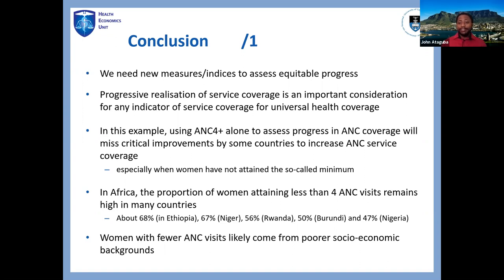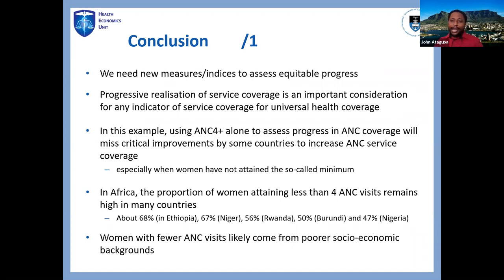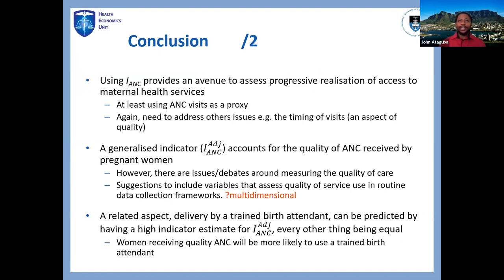In Africa, the proportion of women with less than four ANC visits remains really high. In Ethiopia, close to 70% of women have not had up to four ANC visits; in Nigeria, about 50%. Women with very few ANC visits are more likely to come from poor, uneducated people living in rural areas. So if countries are making efforts to move people gradually — the people with the greatest need being the poor — and you pump in money moving them gradually, you never catch that progress until you reach that switching point. The new index provides an avenue to assess progressive realization of access to maternal health services.